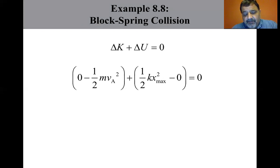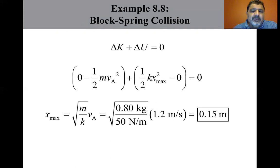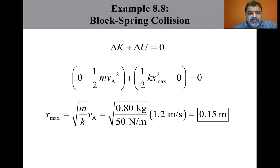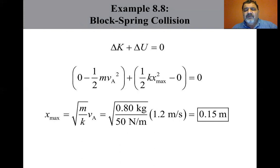Solving for X_max: X_max equals the square root of M divided by K times V_A. Substituting values — 0.8 kilograms, 50 newtons per meter, 1.2 meters per second — we get X_max equals 0.15 meters. That's the idealized frictionless case.